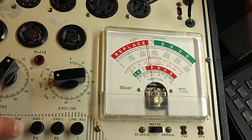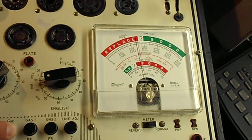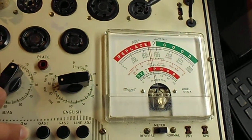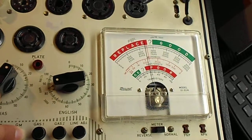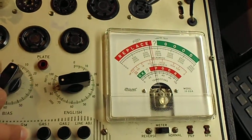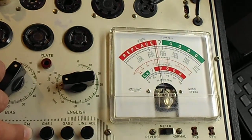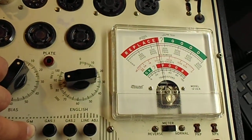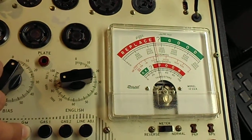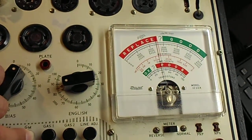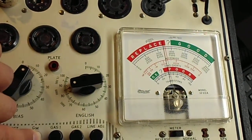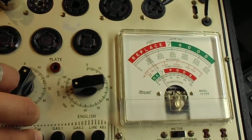Now, the funny thing about these old meters is they have this, as you can see, red area means replace and green means good. But you have to be careful not to let yourself be convinced of throwing away your tubes because that's not really applicable for measuring mutual conductance.